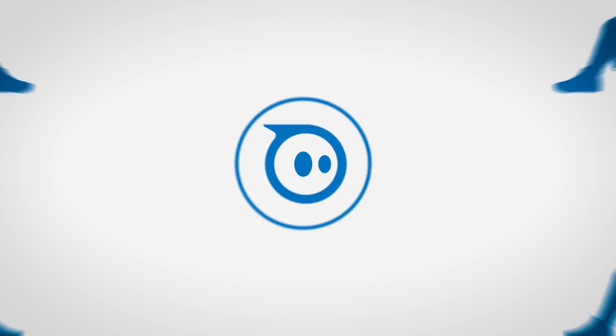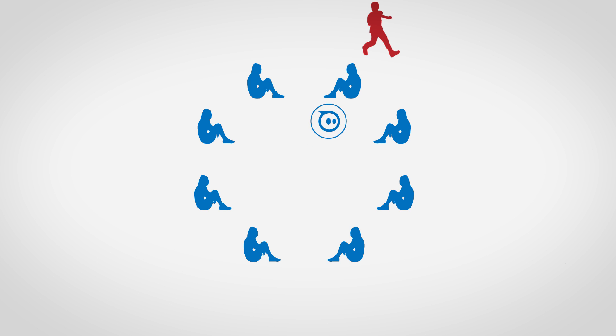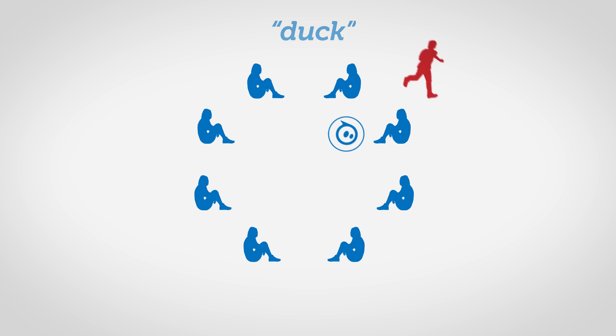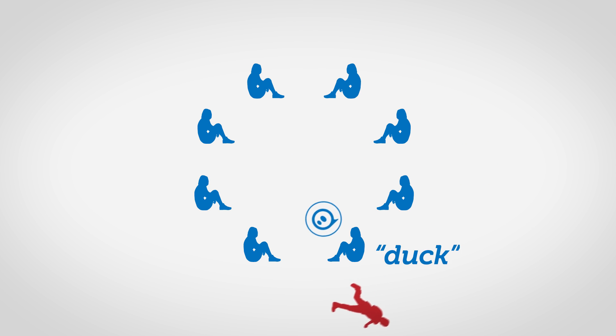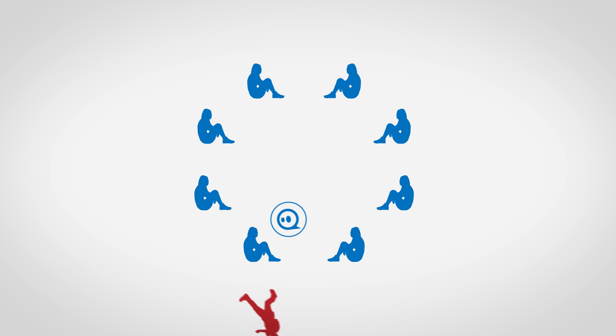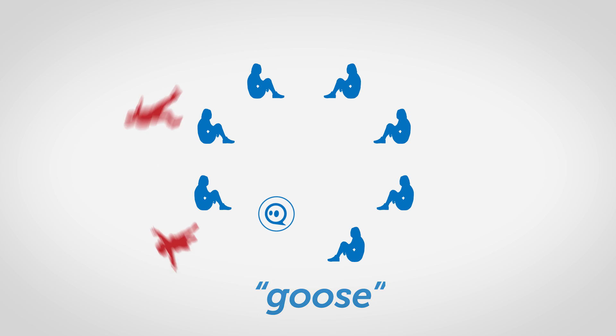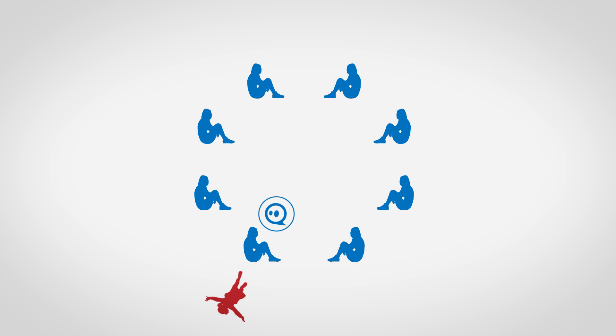Duck, Duck, Goose is a classic elementary school game. The player who's it walks around the circle saying 'duck, duck' until they've found the person they want to be it next, and then they yell 'goose.' In this case, Sphero is going to be the one yelling Duck, Duck, Goose.